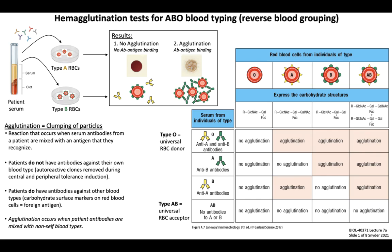People with type O blood are called universal RBC donors because their red blood cells express no surface antigens, so nobody has anti-O antibodies, and therefore all patients can receive type O red blood cell transfusions. Conversely, people with type AB blood are called universal RBC acceptors because they are tolerant to both A and B antigens, and in the absence of anti-A and anti-B antibodies, they can receive any blood type of RBC transfusion. Note that for serum compatibility — another important component for blood transfusions — it would be harmful to transfer serum antibodies from a donor that would recognize a recipient's own blood cells.